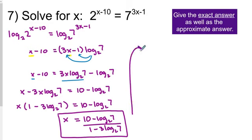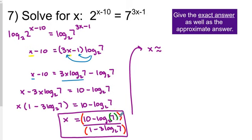For the approximate answer, I'm going to put that into my calculator. You have to make sure you have parentheses around your entire numerator and parentheses around your entire denominator for the order of operations to work. Additionally, if your calculator opens parentheses before the 7 inside the logarithm, you need to close those before you move on — same thing on the bottom.